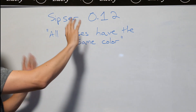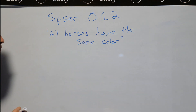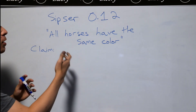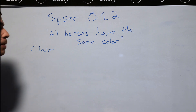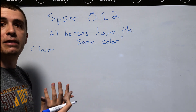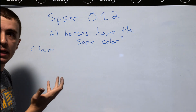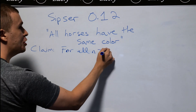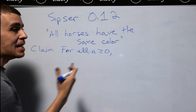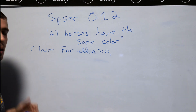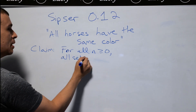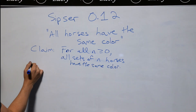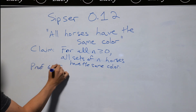How do we prove a statement like 'all such and such is true'? We're going to prove this via induction. I'm going to make a claim along the lines of all horses have the same color, but phrase it in a slightly different way so that it's easier to prove via induction. I'll phrase it as: for all n, at least 0, where n is a non-negative integer, all sets of n horses have the same color.